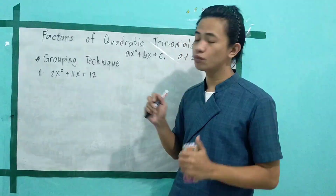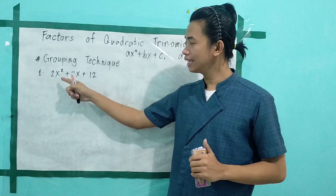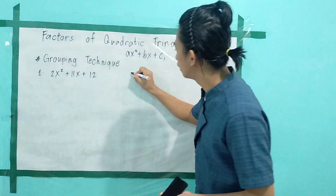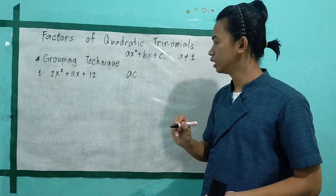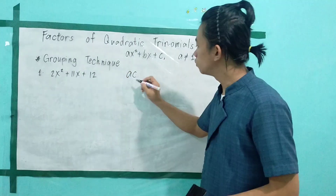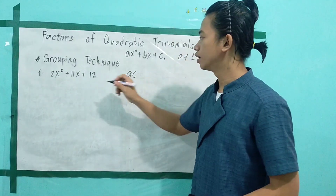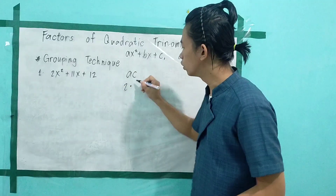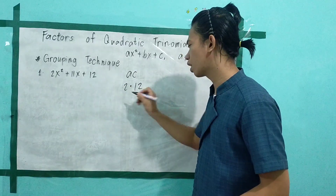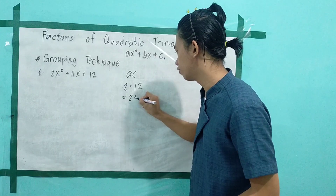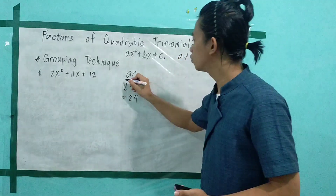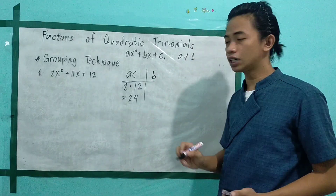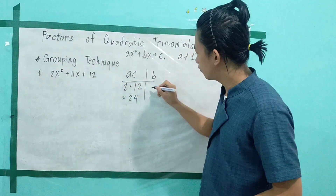So what we will do is take the numerical coefficient of a and multiply it by c. We have a multiplied by c. So our a is 2, then multiply it to our c, which is equal to 12. So 2 times 12, we have 24. And then, take also the numerical coefficient of b, which is equal to 11.